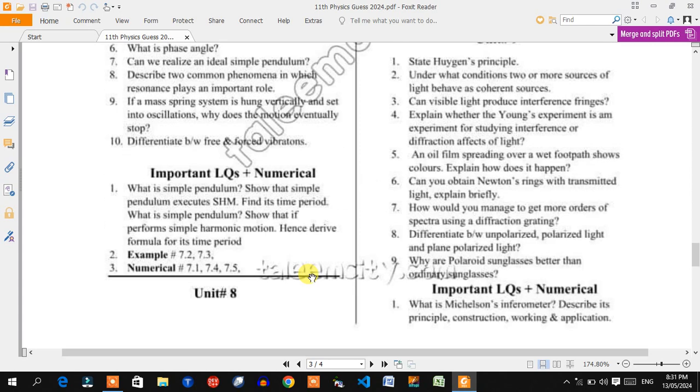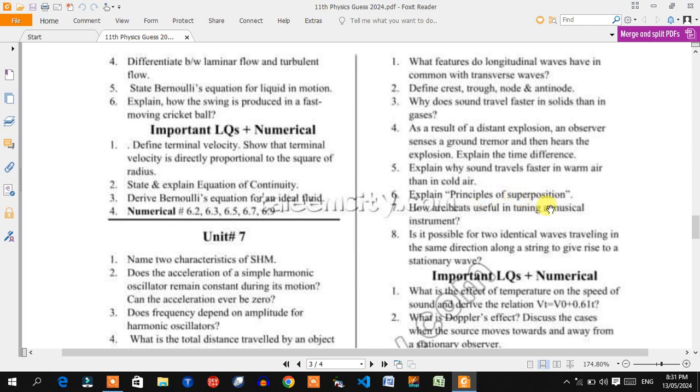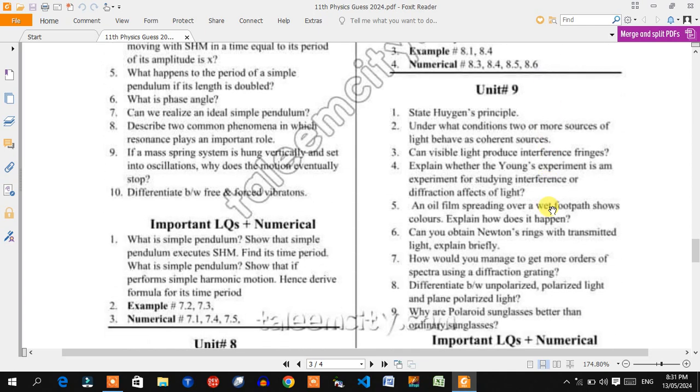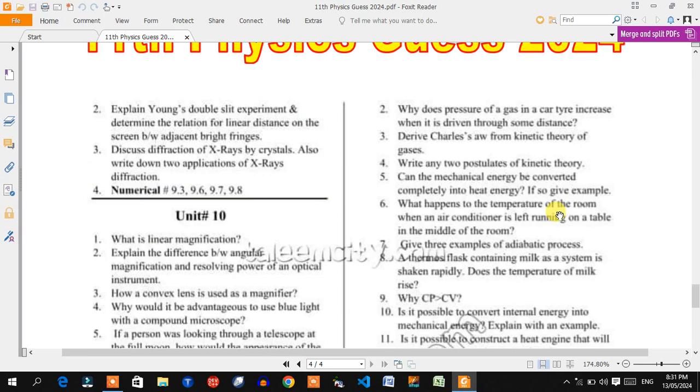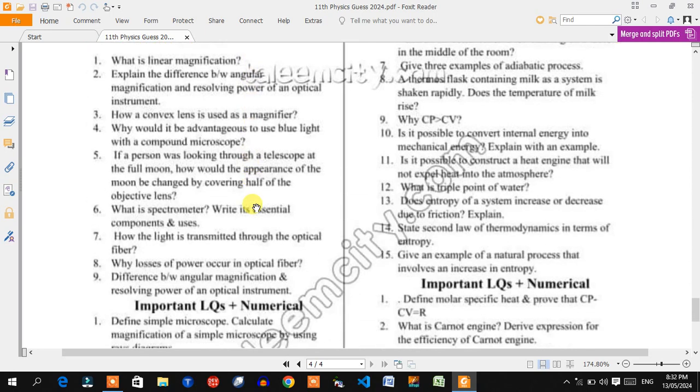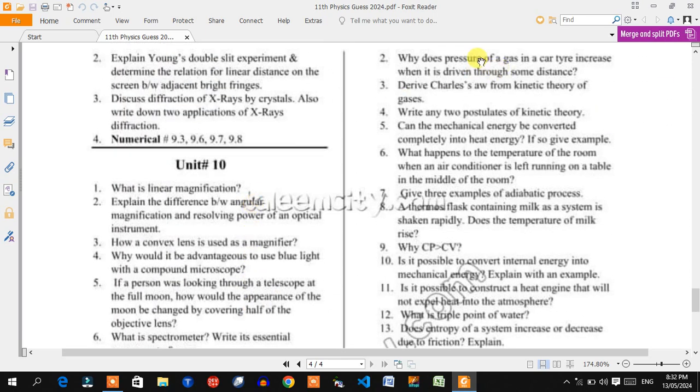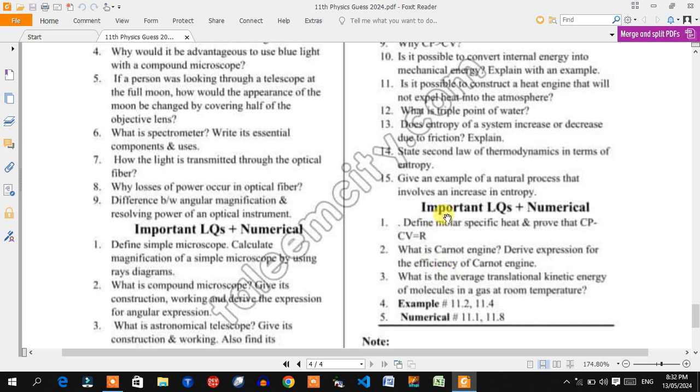Next chapter, prayer number eight. Questions include features of longitudinal waves, nodes and antinodes, and principle of superposition as a long question. Chapter nine is the most important - complete guess. Let's see if we have a new guess.